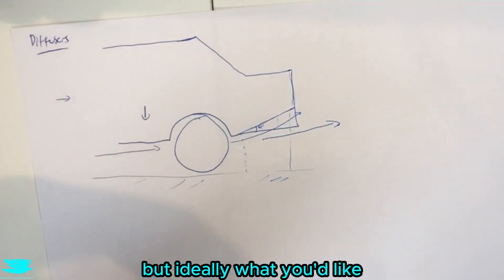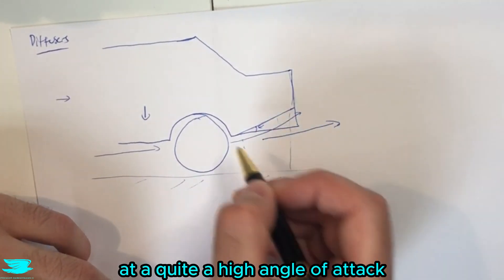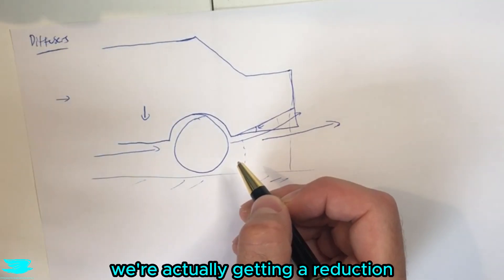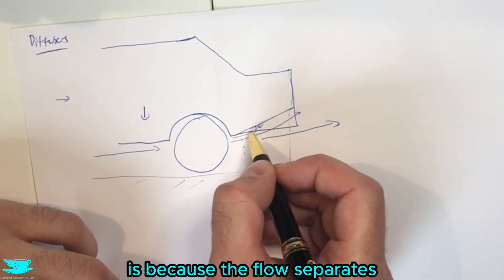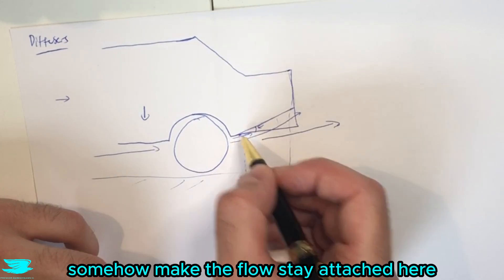But ideally what you'd like to do is run this diffuser quite high at a quite high angle of attack. And the reason why a lot of people when they research this they say oh that's not good we're actually getting a reduction in performance is because the flow will separate around this corner here. So you need to actually somehow make the flow stay attached here.